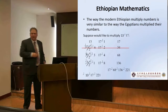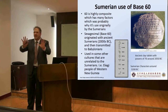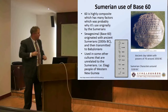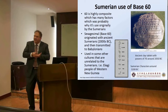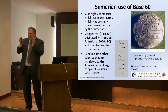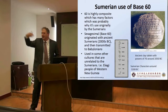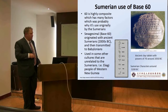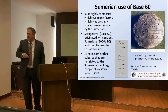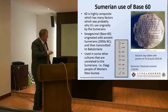Sumerians used a base 60 number system — what we call the sexagesimal base — which probably originated with the Sumerians. Today it carries through: we have 60 minutes in an hour, 60 seconds in a minute, and 360 degrees in a circle. The Sumerians were there before the Babylonians. Also fascinating is that the Yupik people in Western New Guinea also had base 60 numbers independently. Here's a clay tablet from 2050 BC showing powers of 70 — these tablets were most likely school exercises written in wet clay using a stylus called cuneiform.